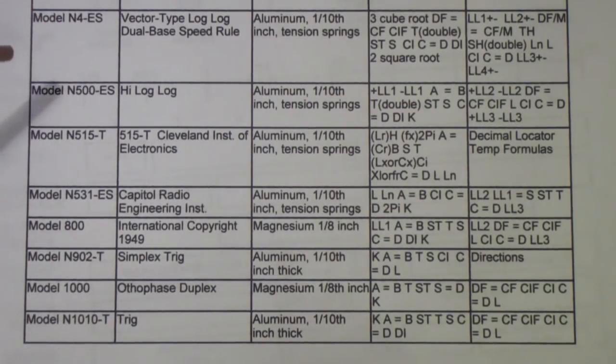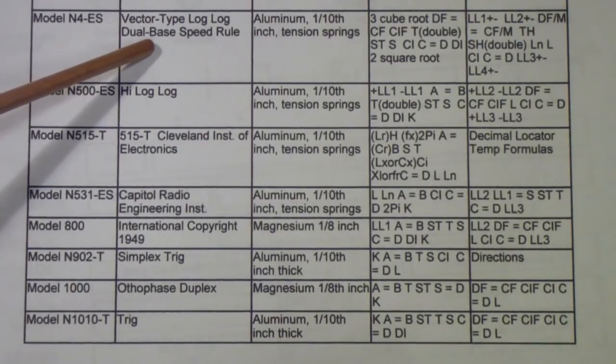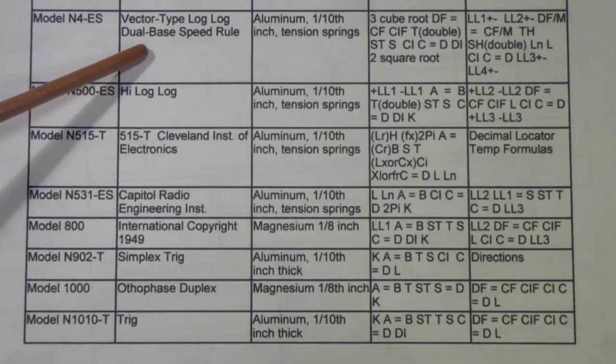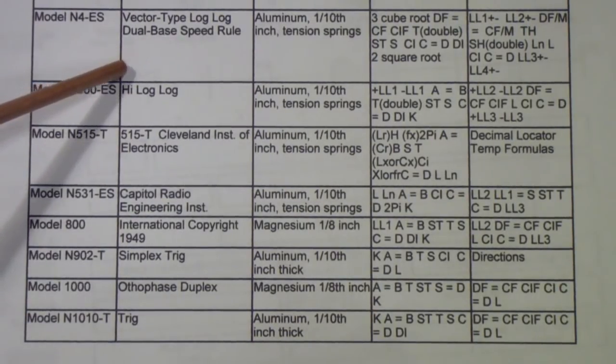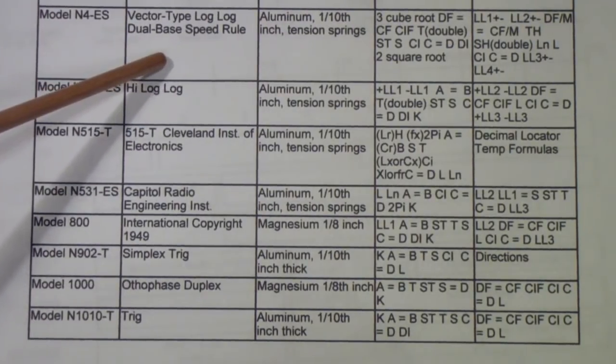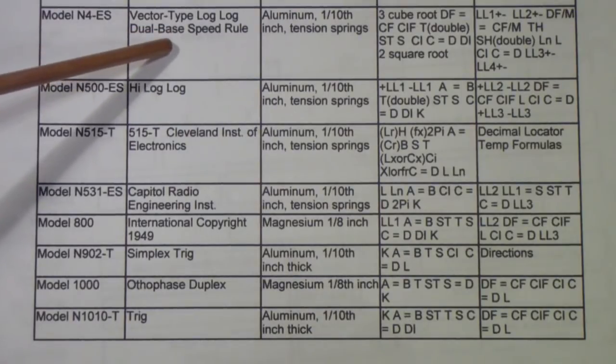They used various names. One of the things that Pickett did was the log-log scales were somewhat unusual. If you want more in-depth treatment, go to Professor Herning's website. Pickett called their log-log scales dual base because unlike most slide rules that used a log 10, log E format, Pickett used log 10, log 10 format. That was what they called dual base.